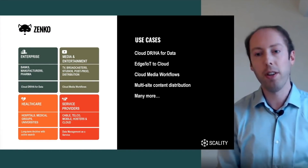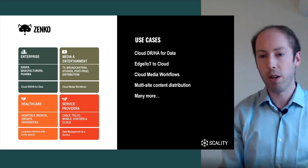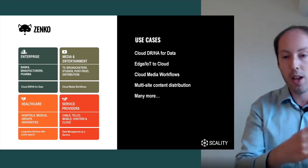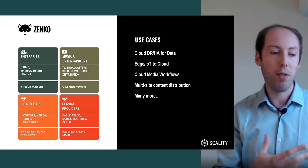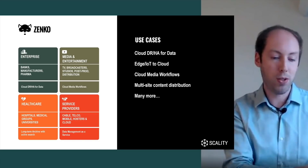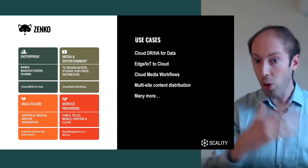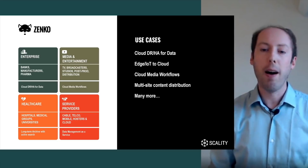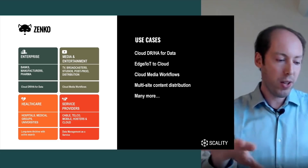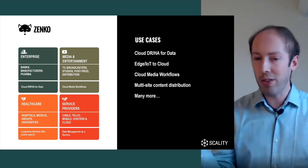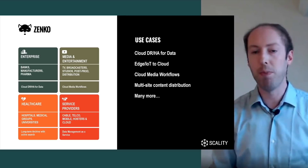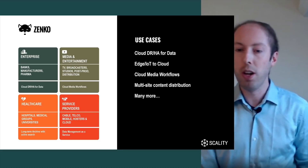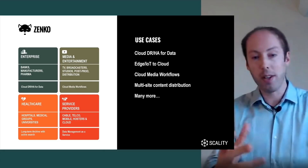Some of the use cases: the core ones we identified are cloud disaster recovery and high availability for data. As an example, you can make sure any object storage on-premises gets asynchronously copied into a cloud environment. If you design your application to move from on-premises servers into VMs in EC2 or a hosted Kubernetes cluster, you can have close to zero business continuity impact. Zenko also works well in edge or IoT-to-cloud environments, where Zenko sits in various locations, ingests from IoT devices or sensors in a plant, and then copies that data into a cloud environment or core data center. Many customers use Zenko for cloud media workflows — on-premises editing combined with cloud transcoding, for example.